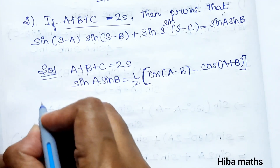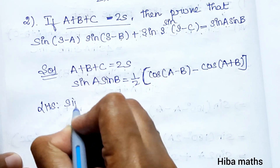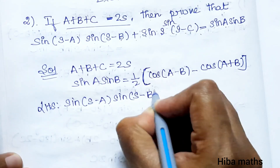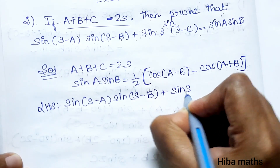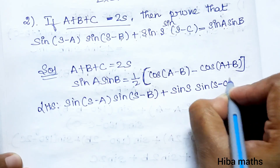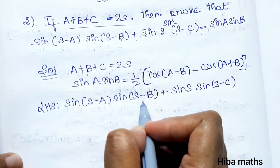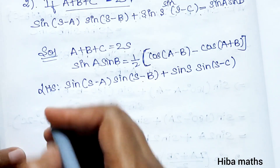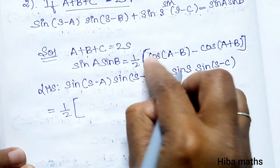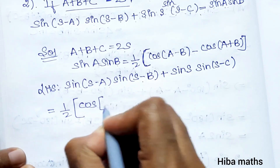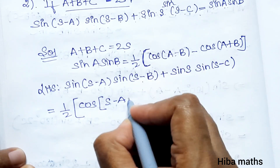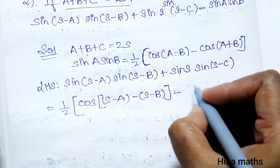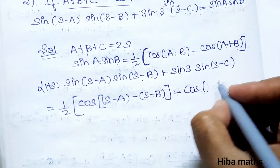Now let's look at LHS: sin(s-a)sin(s-b) plus sin(s)sin(s-c). Comparing with the identity, the full first term is A and the full second term is B. Substituting the formula, the next line gives 1/2 cos[(s-a) minus (s-b)] minus cos[(s-a) plus (s-b)].